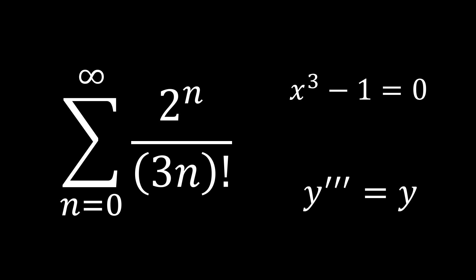Hello guys and welcome to another calculus video. In this video we're going to be checking out this awesome infinite sum on the left. It's the sum from n equals 0 to infinity of 2 to the n over 3n factorial. It's going to take us through a few different concepts with power series and differential equations, and I think it's going to be pretty interesting. So I hope you guys enjoy the video and let's jump right into it.